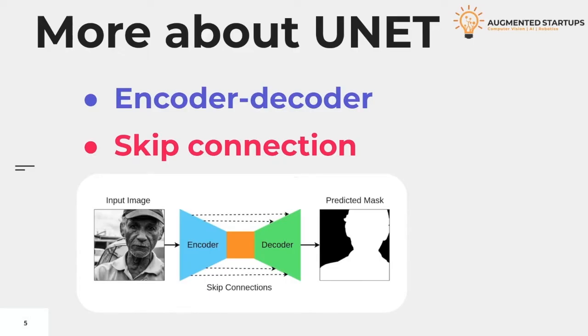Here we have an image that displays the overall architecture of the UNET. First, the encoder receives the input image, then extracts useful features from that image using multiple convolutional layers.